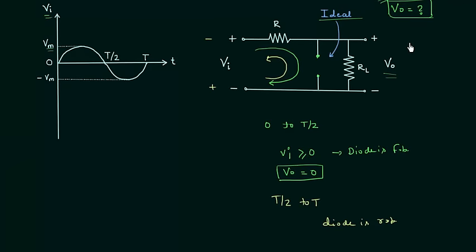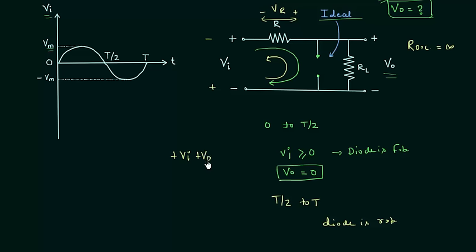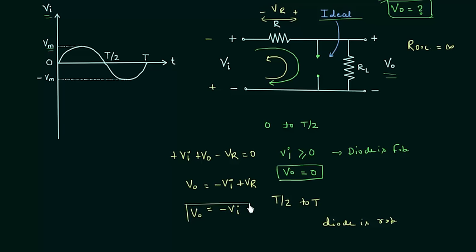Since the diode is reverse biased, we replace it with an open circuit. There will be no current through that branch because the resistance of an open circuit is infinity, so current flows through the load resistance. Applying Kirchhoff's voltage law: Vi + Vo − VR = 0, giving Vo = −Vi + VR. Since the series resistance is very small, the drop VR is negligible, so Vo is simply equal to −Vi.